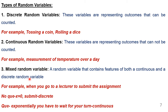The third type is mixed random variable. This random variable contains pieces of both continuous as well as discrete random variable. For example, when you go to submit an assignment to your teacher and if there are no students submitting, then there is no queue — it is zero — and it is discrete in nature. But if there are two or three students waiting, you have to stand in queue and wait for your turn, and that is continuous in nature.